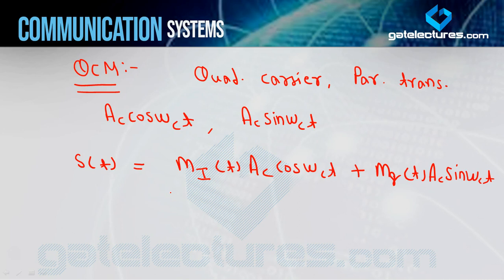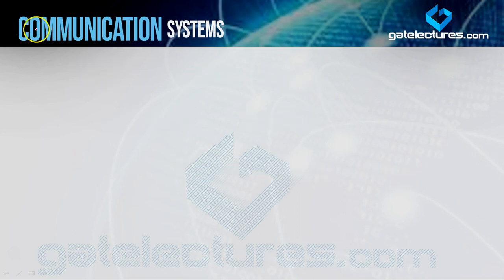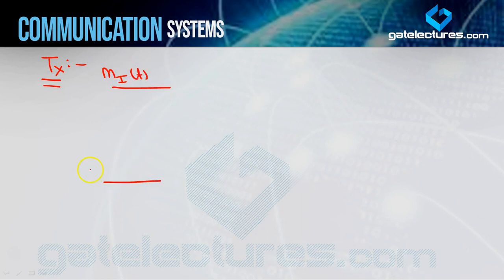Basically aapke do alag-alag message signals hain. Jisko aap ek carrier AC·cos(ωct) ka use karke transmit kar rahe ho, aur jisko aap doosre carrier AC·sin(ωct) ka use karke transmit kar rahe ho. Dono hi carrier quadrature carrier hain, kyunki dono ke beech ka jo phase shift hai, wo 90 degree hai. So basically aap yeh keh sakte hain ki aap do different message signals ko quadrature carrier pe transmit kar rahe hain.